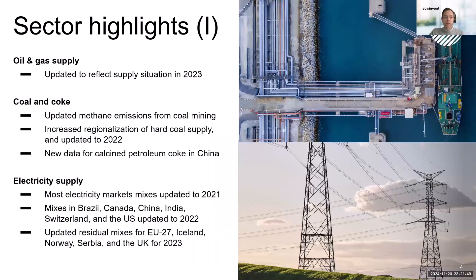Starting with energy-related topics: we have built on comprehensive updates of oil and gas supply from the two previous releases to bring the supply of natural gas and oil up to the status of 2023, reflecting the dramatic shifts in these supply chains especially for Europe. We have also improved coal supply chains by updating methane emission factors from mining and regionalizing coal supply in Europe and Asia. Electricity markets have been updated — most countries now up to 2021, some up to 2022 — including updated residual mixes.